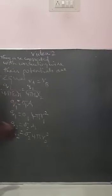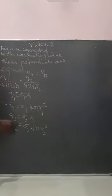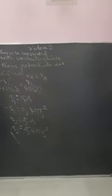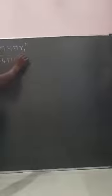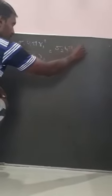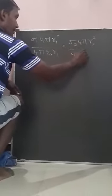Now substitute the Q1 and Q2 values into the equation. Q1 is sigma 1 into 4 pi r1 squared divided by 4 pi epsilon r1, and this equals sigma 2 times 4 pi r2 squared divided by 4 pi epsilon r2. The 4 pi terms cancel out.